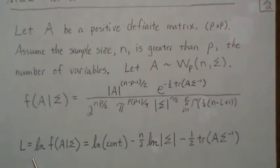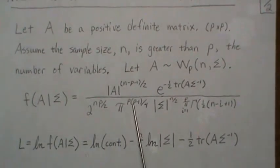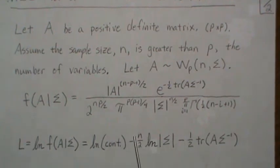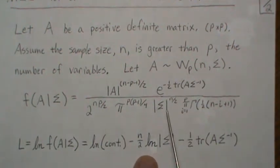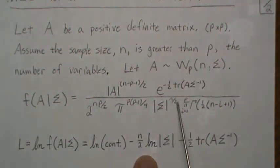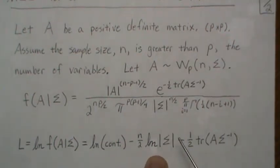So when we take the log of it, the natural log of this, then we have the log of a constant, which is this stuff here, and then log of this, remember it's in the numerator, so the minus n over two comes out, and it's the log of a determinant of sigma.